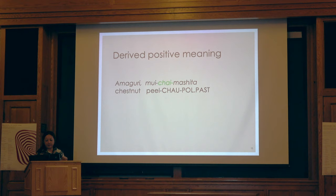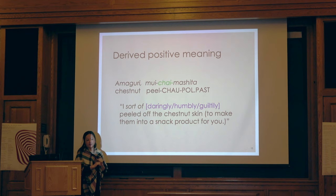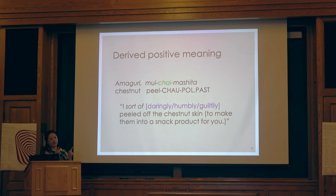Just to demonstrate how far this grammaticalization and subjectification goes: shimau now has a positive meaning. For example, 'amagurimu ijaimashita' — this is actually a product name, a Japanese chestnut product.